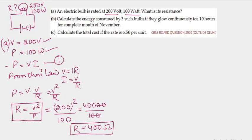Now for part B. In the next question it's asked calculate the energy consumed by 3 such bulbs if they glow continuously for 10 hours in the month of November. In the month of November means it's mentioning here that it is 30 days. We know what is the relation.